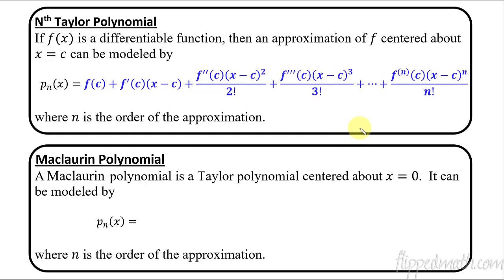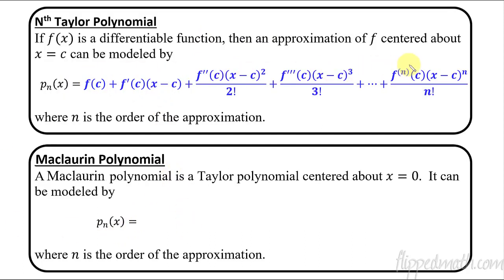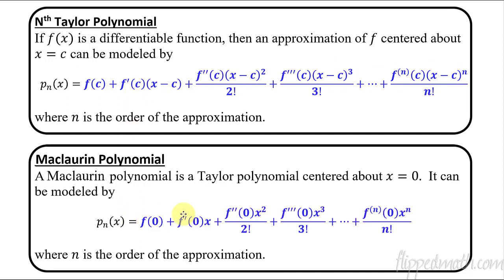Now — Maclaurin. A Maclaurin polynomial is actually just a special type of Taylor polynomial. It simply means it's a Taylor polynomial centered at x equals 0. So the example we did earlier was actually a Maclaurin polynomial because it was centered at x equals 0. If it's centered at x equals 0, all the c's become zeros and it simplifies. You don't have to memorize a separate formula — just use the Taylor formula with c equals 0. What you have to know is: if they say Maclaurin in the problem, you know it is centered about x equals 0.